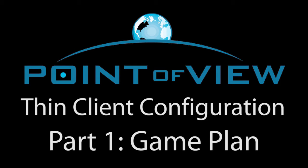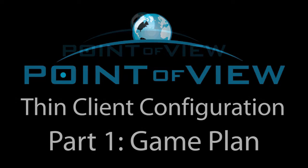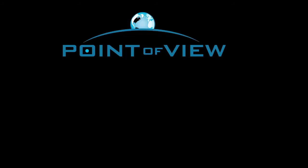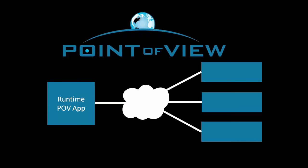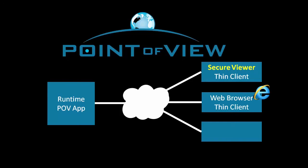Point of View is an awesome HMI SCADA application that allows you to view your runtime app remotely three different ways: the Secure Viewer, which is a thin client that requires only an installation of the Secure Viewer software; a Web Thin Client, which uses a browser to access the Point of View app; and a Mobile Access Viewer, so you can monitor your system on the go on most current tablets, phones, and desktops.